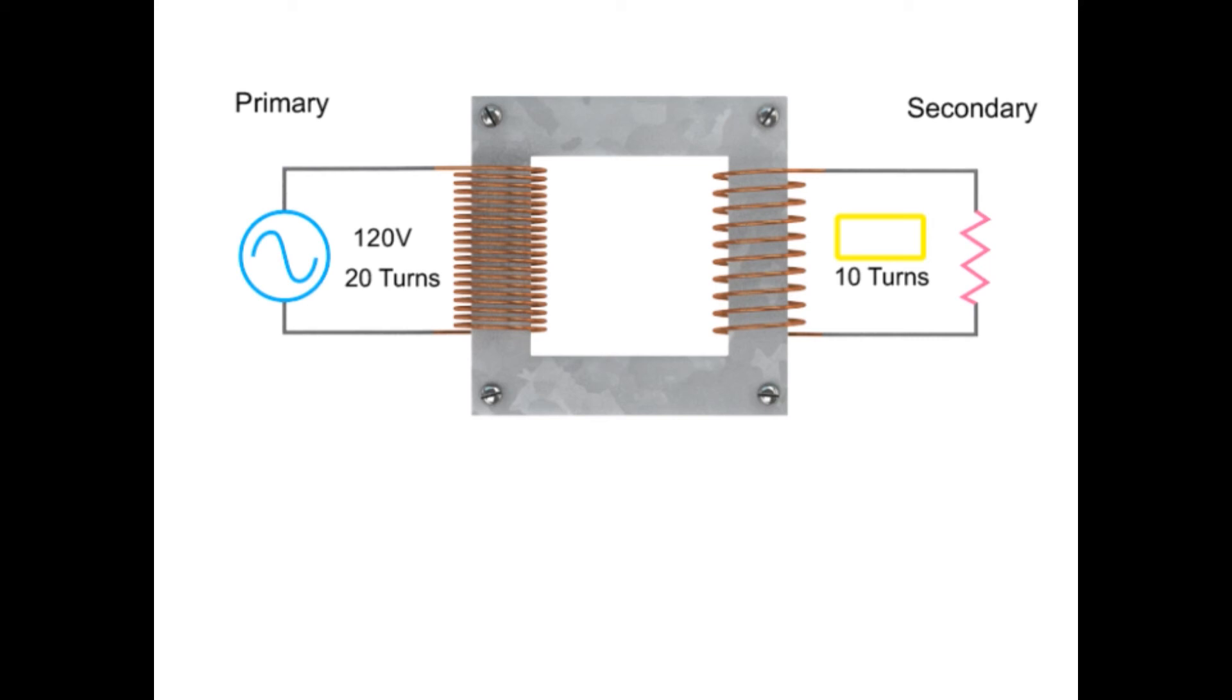This formula simply states that the secondary voltage to primary voltage ratio is the same as the secondary coil to primary coil turn ratio.